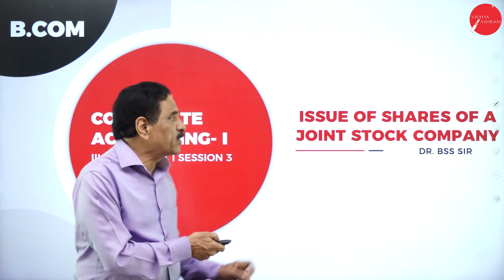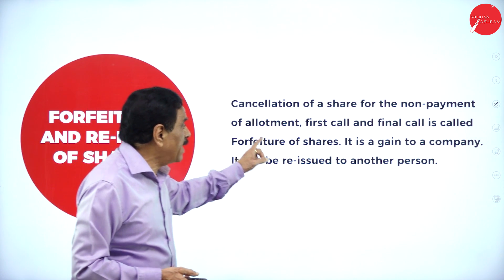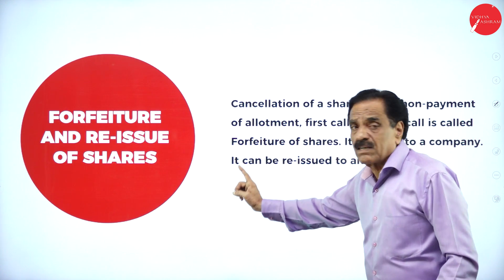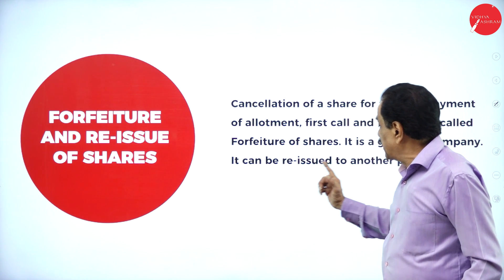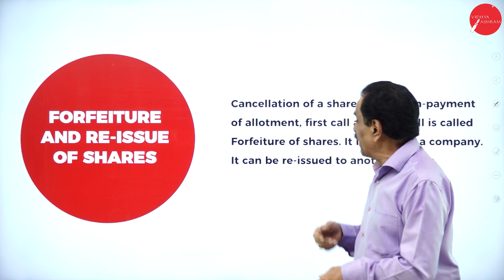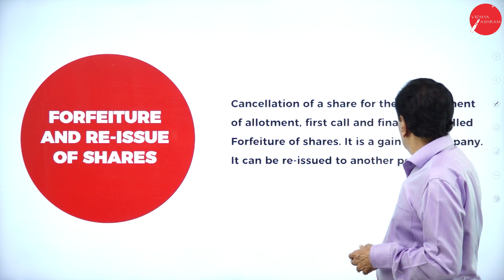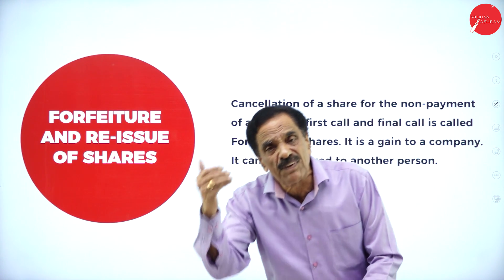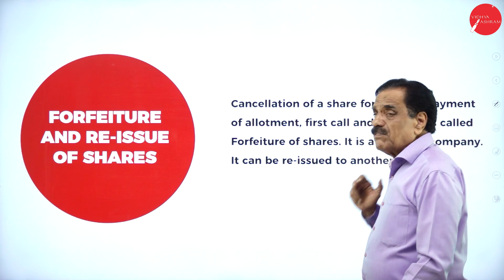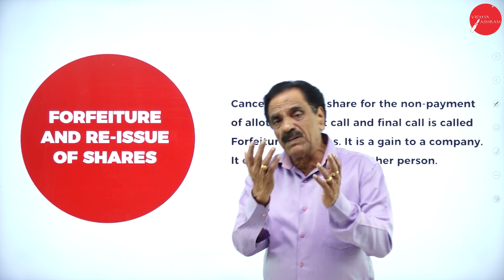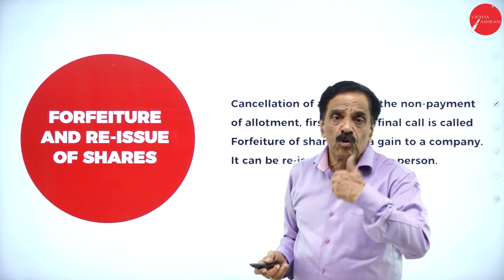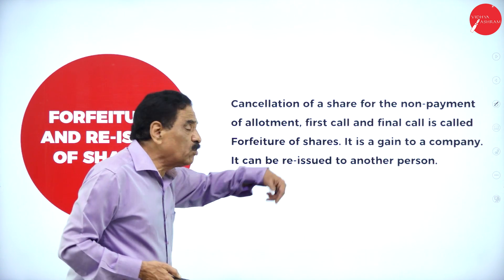Today we are going to discuss about the forfeiture of shares. Forfeiture of a share means cancellation of a share for the non-payment of allotment, first call, and final call. It is a gain to the company, and the share can be re-issued. The failure may be in allotment, first call, or final call. If failing allotment, a chance is given to pay. If he does not pay, the share will be cancelled. The entire money goes in favor of the company and you are no more a shareholder.